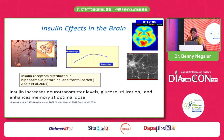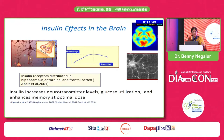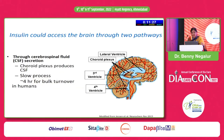Insulin is required in the brain mainly to increase neurotransmitter levels, produce glucose utilization, and enhance memory at optimal doses. Insulin receptors are present in the hypothalamus, hippocampus — the center of all memory — some parts of the temporal lobe, and the frontal cortex. If there is insulin deficiency, it gives rise to cognitive dysfunction and glucose dysregulation.